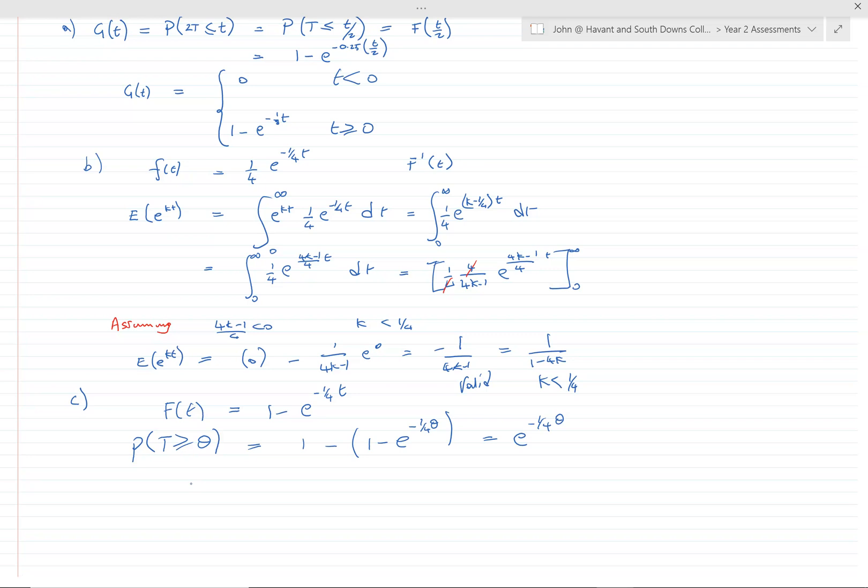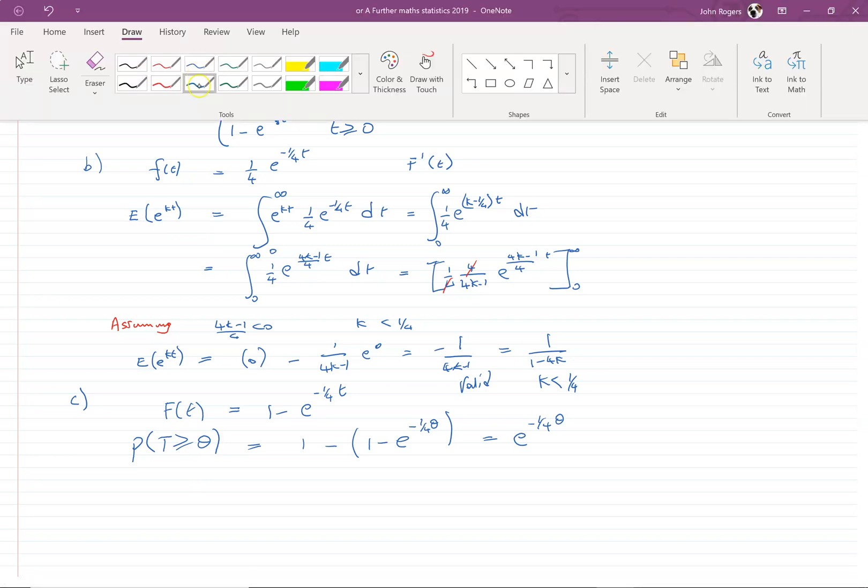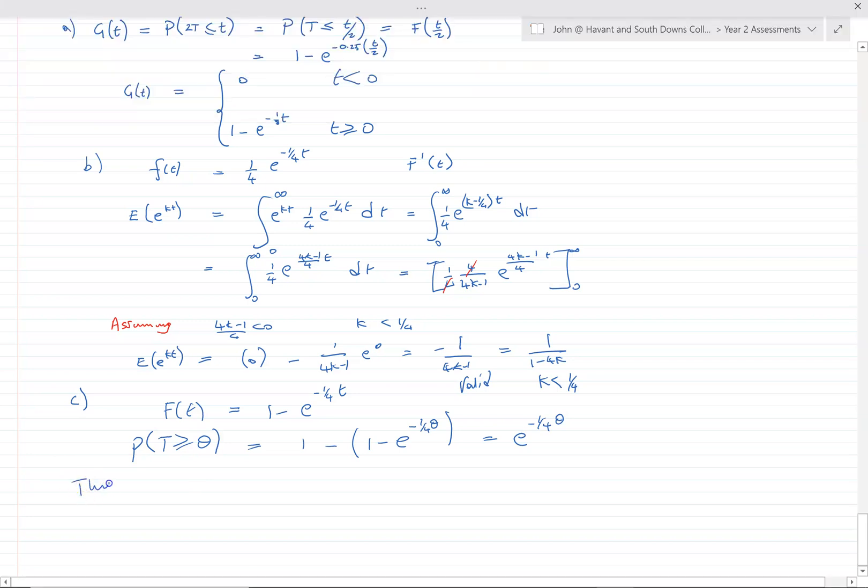Now here's the thing, this represents a probability that it takes longer, that the first occurrence occurs after some specific time frame θ. It occurs after that. Well, that is the same as there being no occurrences between naught and θ.